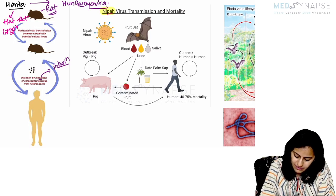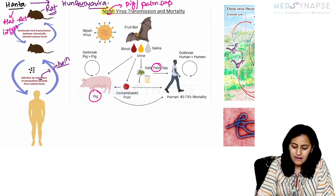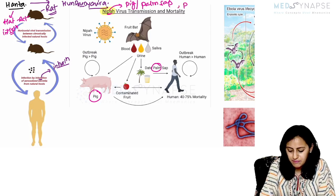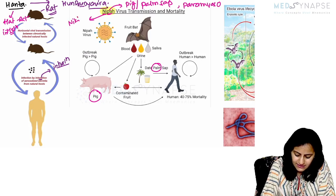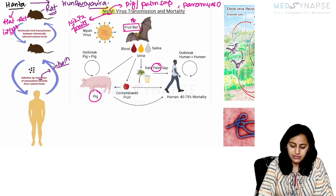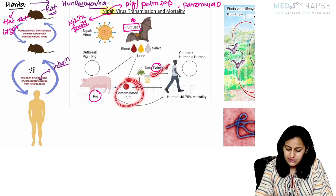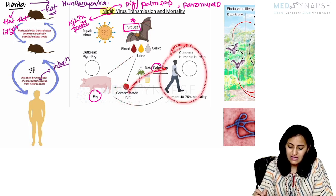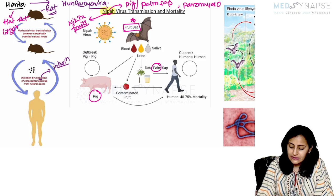Next is Nipa virus. Remember 'pp' — you would see the pig and the date palm sap shown in the image. Pig and date palm sap means Nipa. 'Pa' — this belongs to Paramyxovirus. 'Ni' — Nikita loves to eat fruits, so Nipa will also have the fruit bat. The fruit bat contaminates the fruit and date palm sap, and consumption leads to the Nipa virus outbreak.